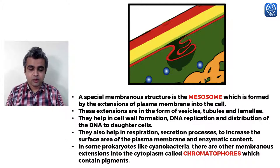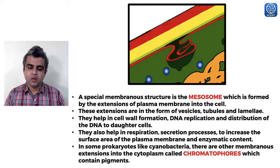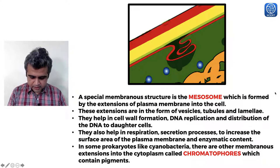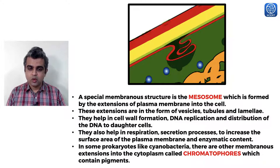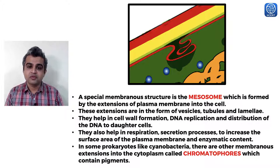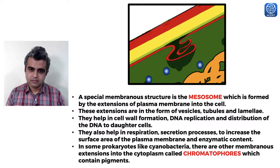In some prokaryotes like cyanobacteria, infoldings that form vesicles may contain pigments required for photosynthesis and are called chromatophores. So in cyanobacteria-type cells, such membranous extensions are called chromatophores. That completes everything about the prokaryotic plasma membrane and its infoldings called mesosomes.